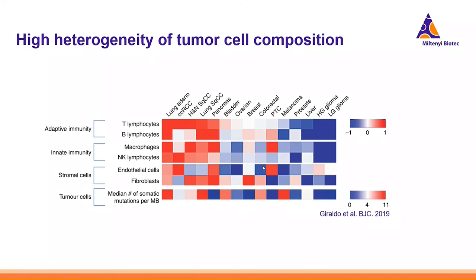As an example showing how heterogeneous tumors can be: this heat map compares, at least on a relative scale, the frequency of certain immune cell types in different tumor entities. There is a really large range — from lung adenocarcinoma, which is highly infiltrated on average, to the other side of the scale like gliomas, where you do not find that many immune cells.